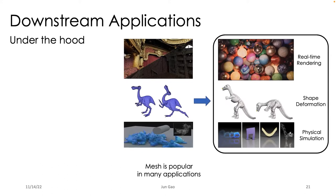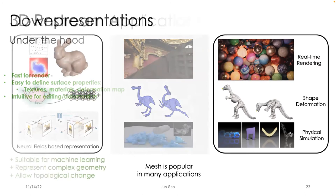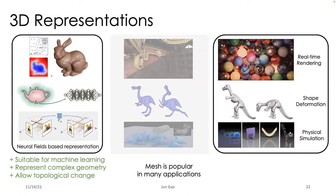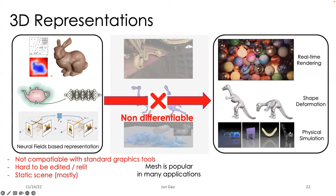Under the hood of these applications, mesh is quite popular. In real-time rendering, mesh is used to define BRDF properties on the surface. In shape deformation and physical simulation, mesh is more intuitive to edit or deform. In past decades, people have developed many hardware and software tools for accelerating mesh design and manipulation. However, neural field-based representations are hard to use in these applications — not compatible with standard graphics tools, hard to edit or relight, and mostly static. One typical approach is converting them to mesh through marching cubes, but since this process is not differentiable, any dissatisfaction in downstream applications cannot be back-propagated into the implicit field.